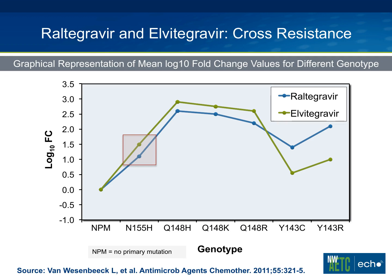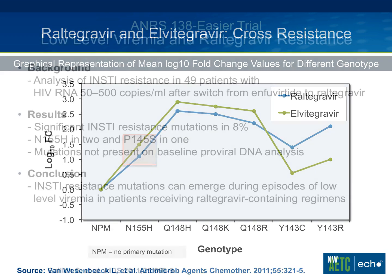Interestingly, things separate out a little in the Y143 pathway — some individuals with Y143 resistance may get at least a partial response with elvitegravir. But the take-home point is that in general, as you can see from these lines, there are very high levels of cross-resistance. Do not rely on elvitegravir if an individual has failure with raltegravir.